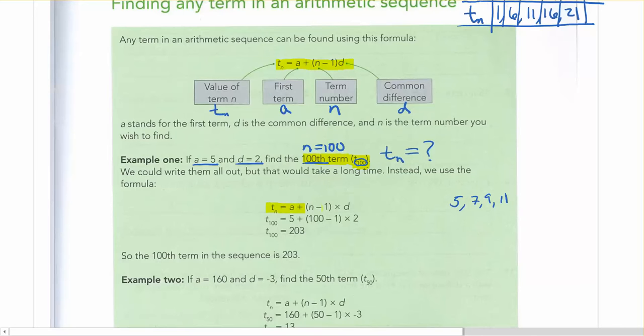So again, this formula is given to you. You just have to be able to apply it correctly in your calculator. So what we're saying is that since a is equal to 5, instead of writing a, we're going to write 5. And then instead of writing n, we're going to write 100, because we want to know what is the value of the hundredth term. And then our common difference is 2. So we're basically plugging in what we know to get what we want.